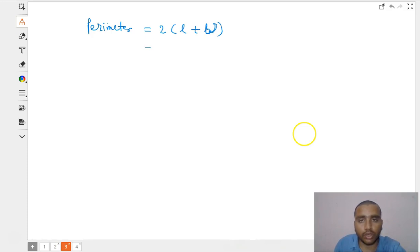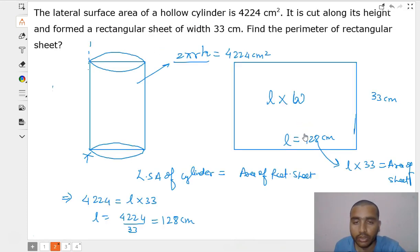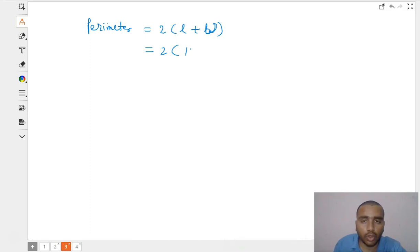We already know the length is 128 and the width is 33. So 128 plus 33 equals 161. 2 times 161 equals 322 cm.